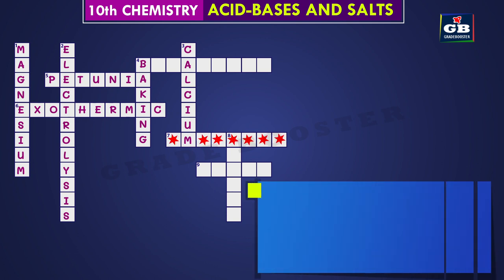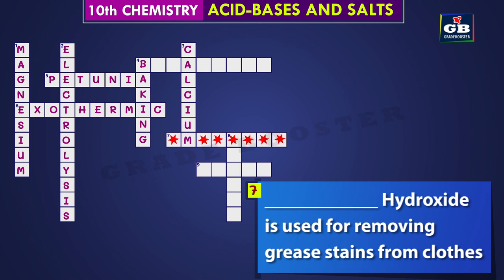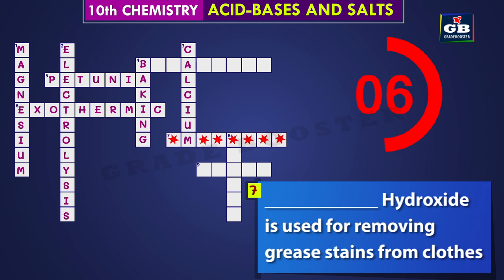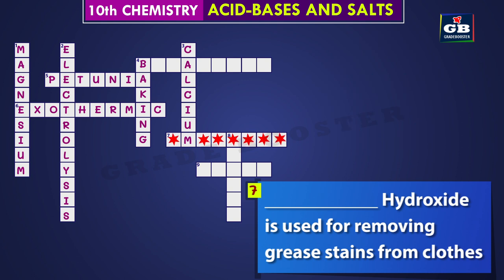Let's see the next one — seven across. Dash hydroxide is used for removing grease stains from clothes. Did you get it? The answer is ammonium. Ammonium hydroxide is used for removing grease stains from clothes.